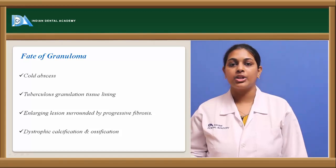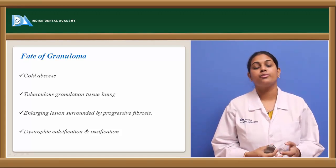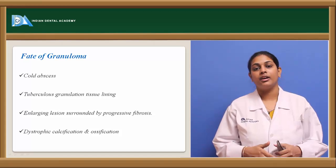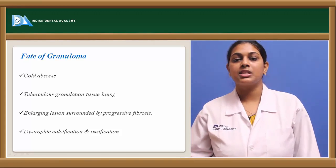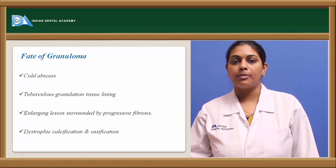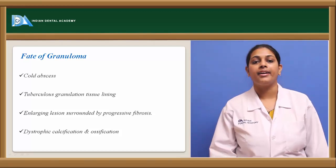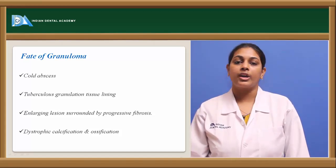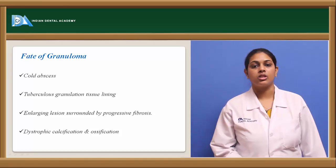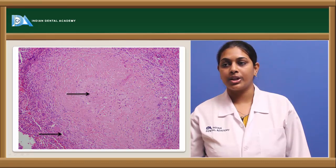Another fate is an enlarging lesion causing progressive fibrosis of surrounding tissue that lacks nutrition. In long-standing cases, there is dystrophic calcification — tubercle bacilli being deposited with calcium and other mineral salts from the blood — occurring in dead and dying tissue. This dystrophic calcification may also progress into ossification, where bone deposition on calcified areas results in ossification of that area.